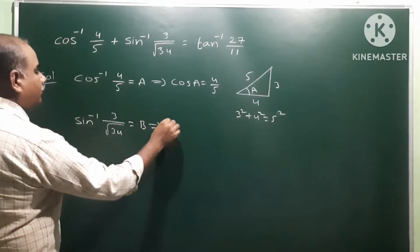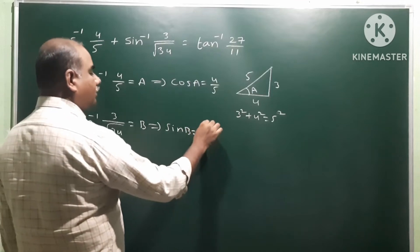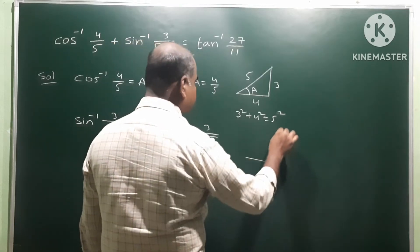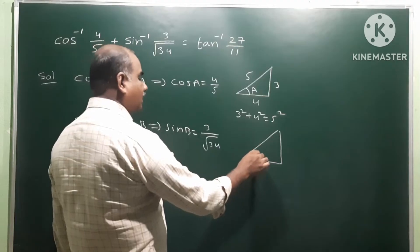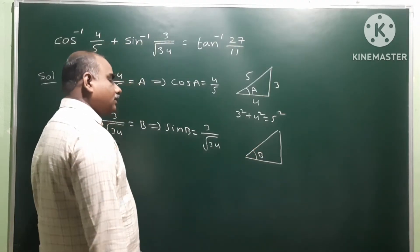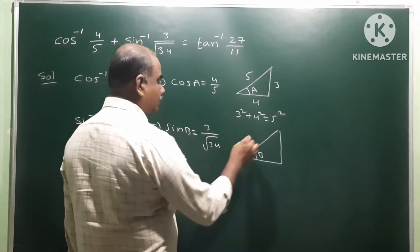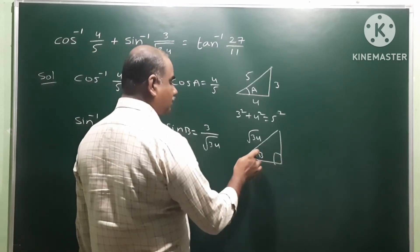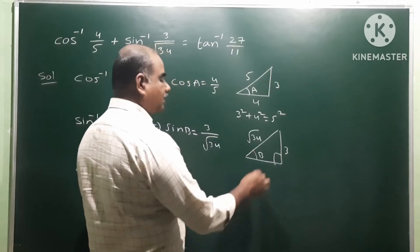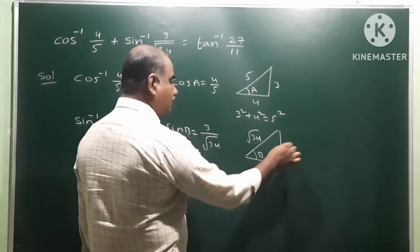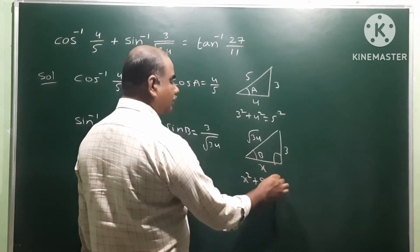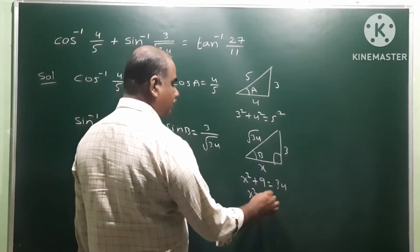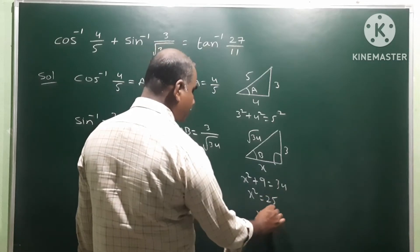The second function, sin inverse 3 by root 34, is taken as b, so sin b equals 3 by root 34. Taking a right angle triangle, sin means opposite side by hypotenuse — root 34 is the hypotenuse and 3 is the side opposite to angle b. Let the adjacent side be x. Then x squared plus 9 equals 34, so x squared equals 25, therefore x equals 5.